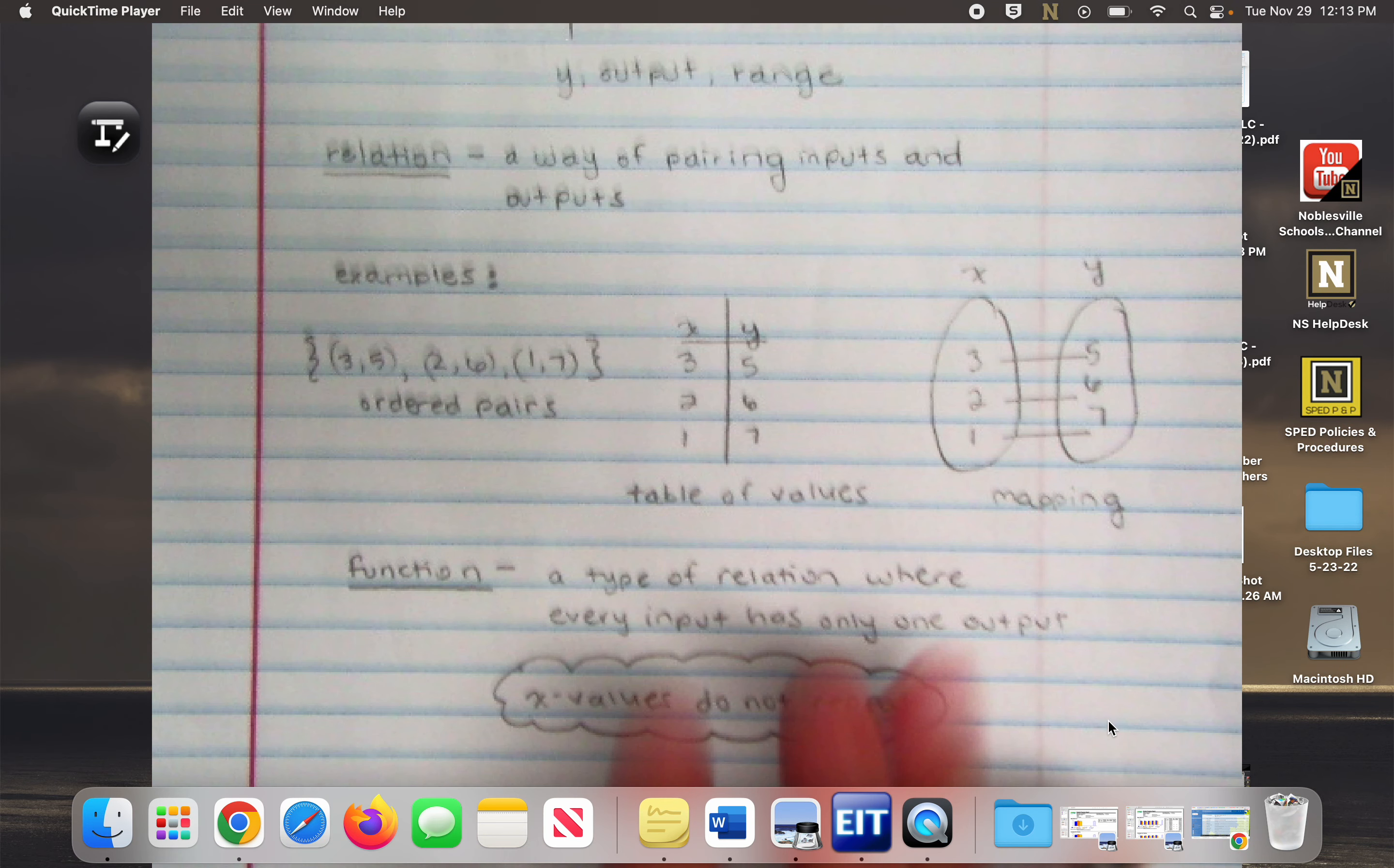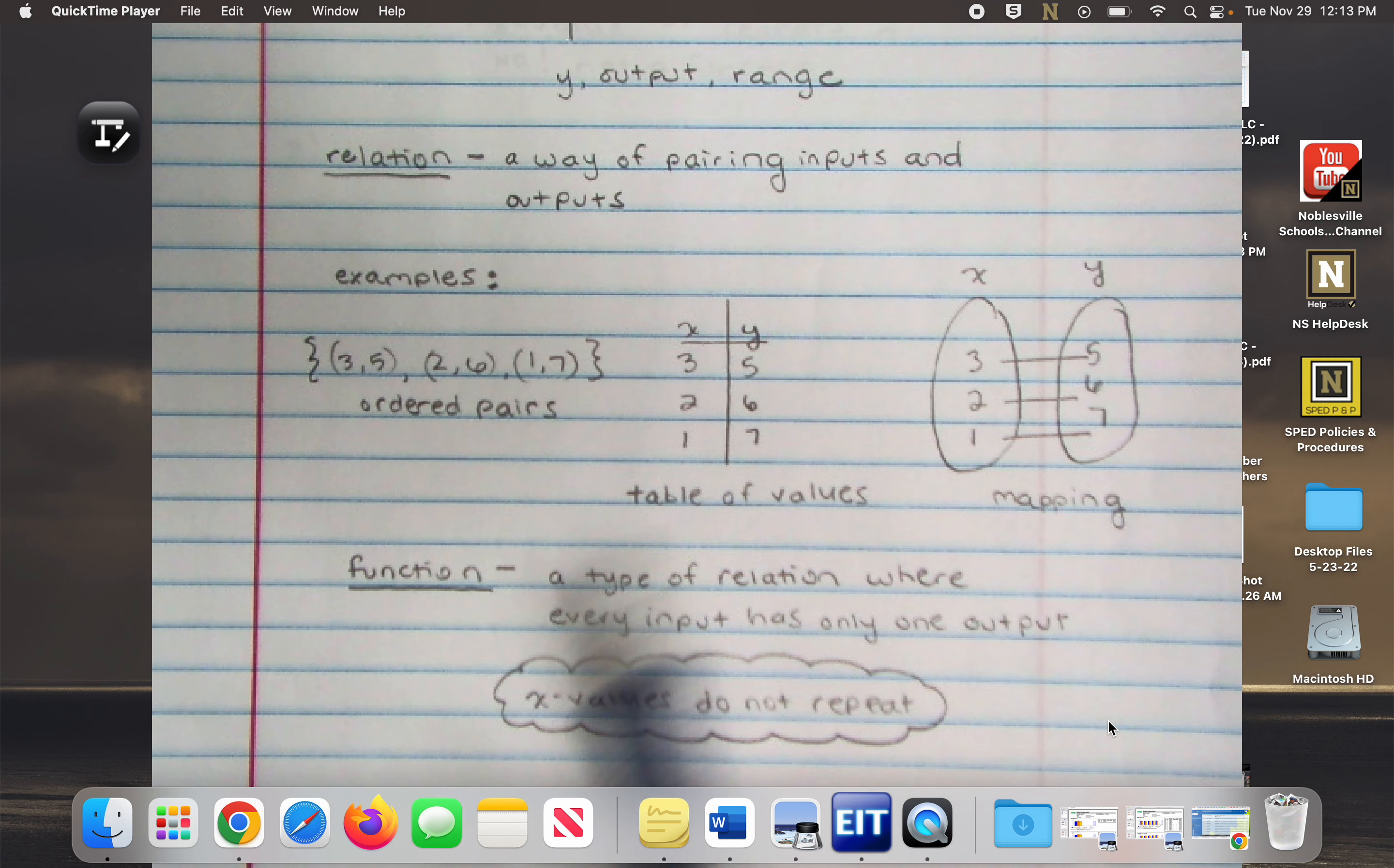And then we talked about specific relations that can be determined to be a function, right? We specifically were focused on the X values. If an X value repeats, not a function. X values don't repeat, it is a function.